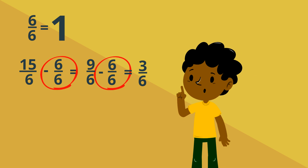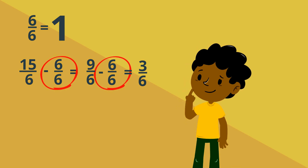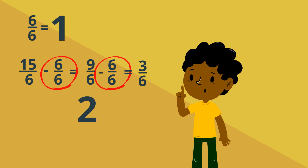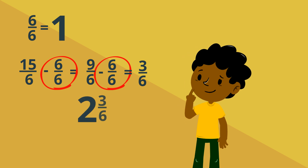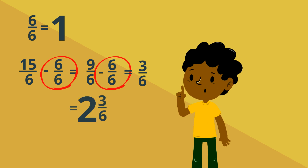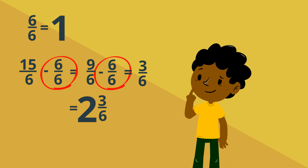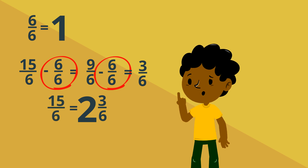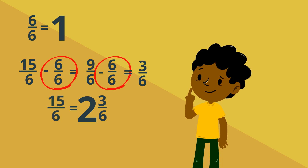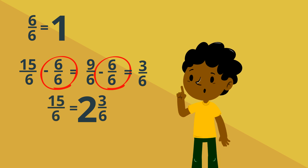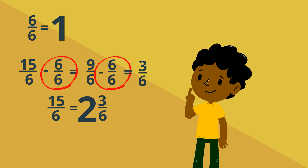We have 2 wholes and 3 sixths. So 15 sixths is a fraction greater than 1, and it is the same as the mixed number 2 and 3 sixths.